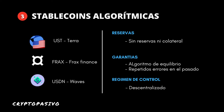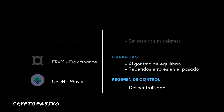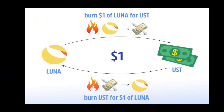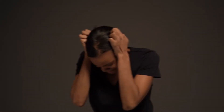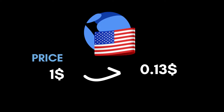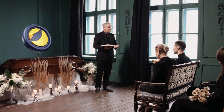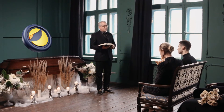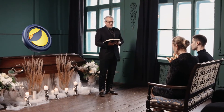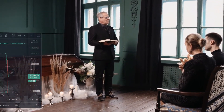Pasamos al último grupo, el que nos ha traído hoy a este funeral: las stablecoins algorítmicas, aquellas que tienen un mecanismo de control entre dos o más tokens para regular la emisión o quema de la moneda estable. Estas monedas permiten la descentralización, pero ¡a qué precio! Son altamente peligrosas al no disponer de un colateral que regula la cantidad de moneda estable que se permite emitir. En caso de ventas masivas, se puede producir una estampida acumulativa que provoca resultados terribles, como lo que ha pasado con Terra UST.